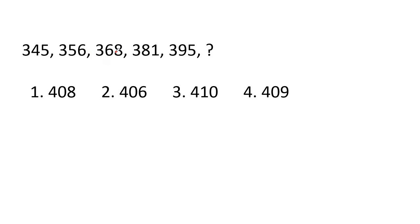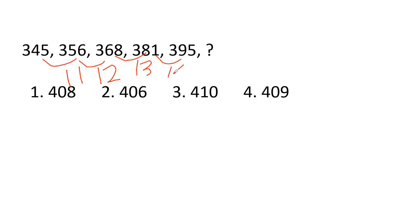Next: 345, 356, 368. The differences are 11, 12, 13, 14 — increasing by 1 each time. So the next difference is 15. 395 plus 15 equals 410. That's option 3.